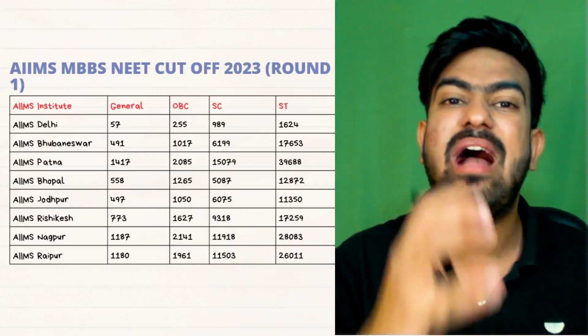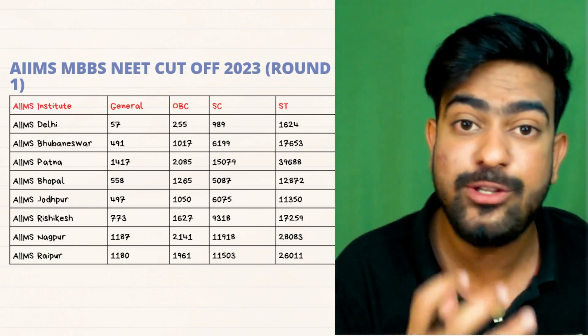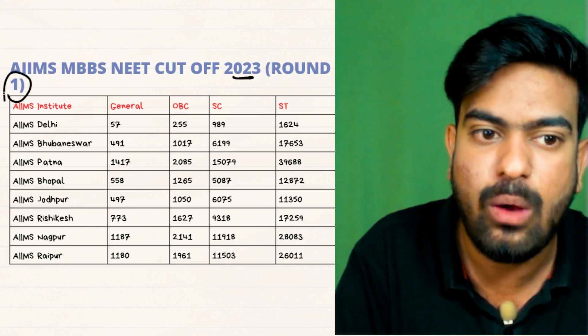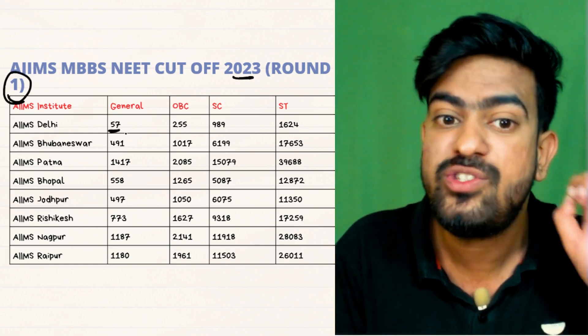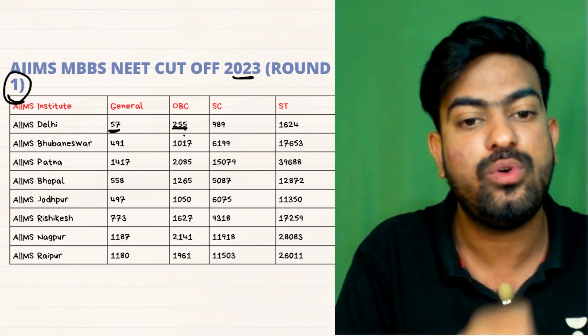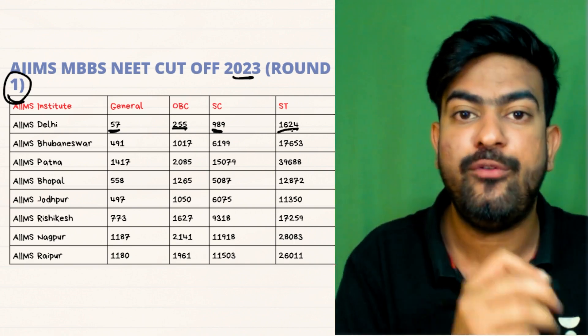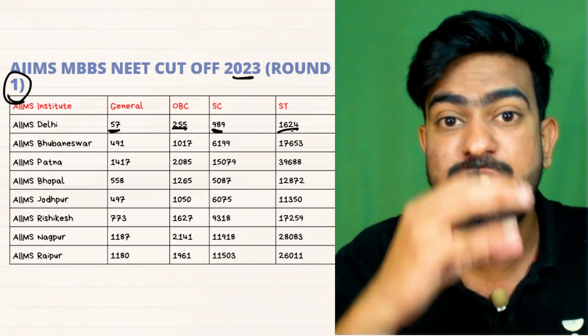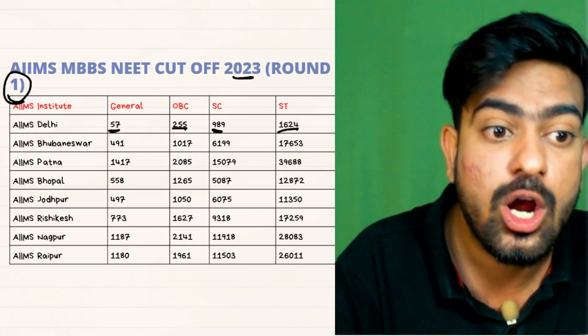So how many marks we need to go into AIIMS New Delhi? How many ranks we need to go into AIIMS New Delhi? So in 2023, if I talk about round one, for the general category the rank was 57, for OBC it was 255, and for ST 989 and SC 1624. So these are the marks of each and every AIIMS colleges. You can screenshot it and prepare accordingly.